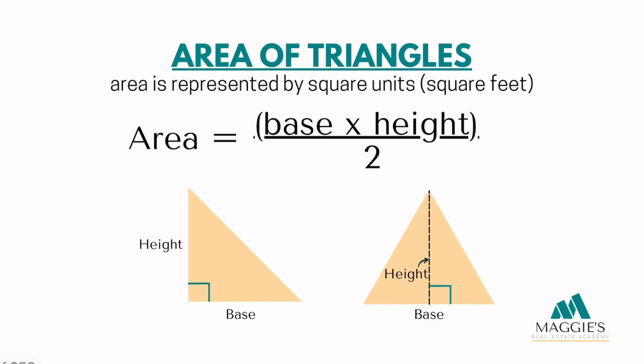Now that we've conquered the area of a rectangle and the area of a square, let's look into how to calculate the area of a triangle. Triangles might appear a bit trickier, but don't worry, we've got you covered. We'll use a specific formula for triangles to find their area. The area of a triangle is equal to the base times the height divided by 2. Let's work through an example that resembles a triangular shaped lot.